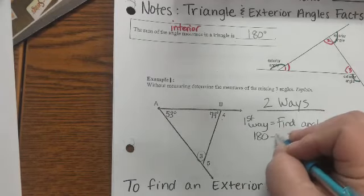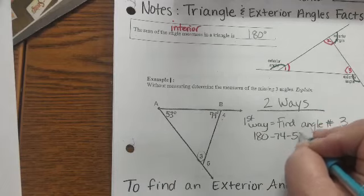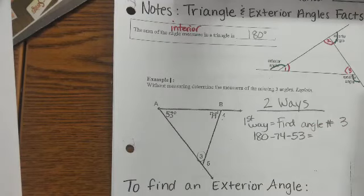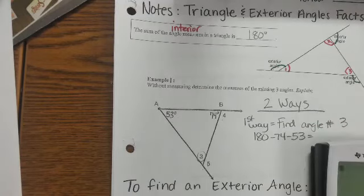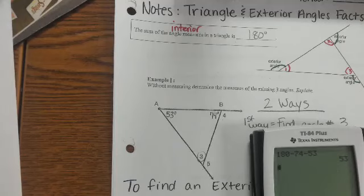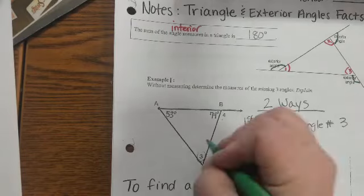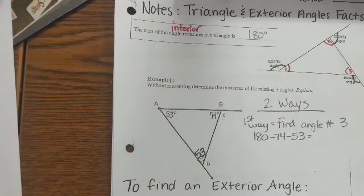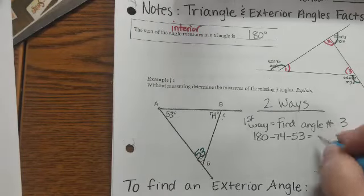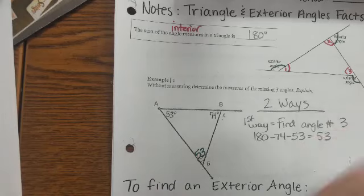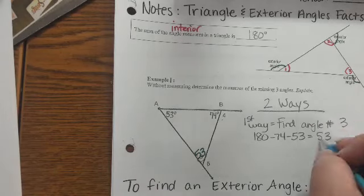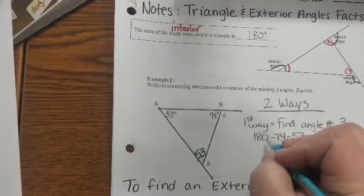180 subtract 74, subtract 53 — and we find that number is actually also 53. So this angle right here is 53 degrees. Equals 53. That's step one.